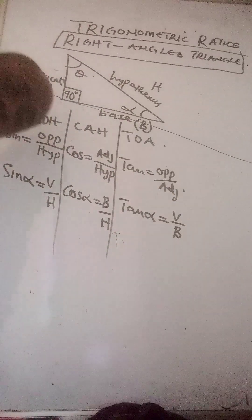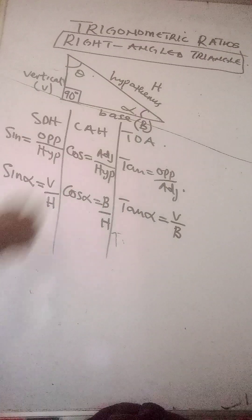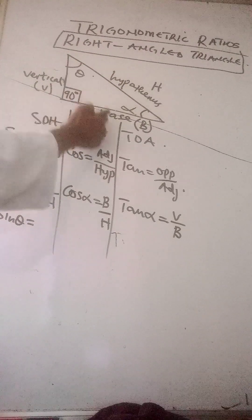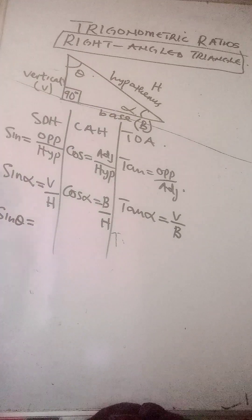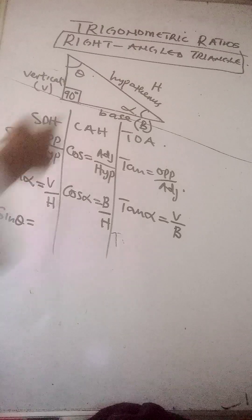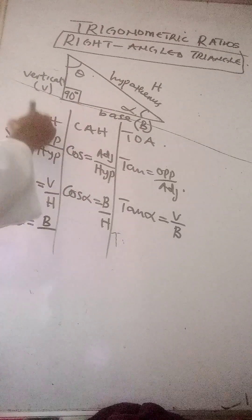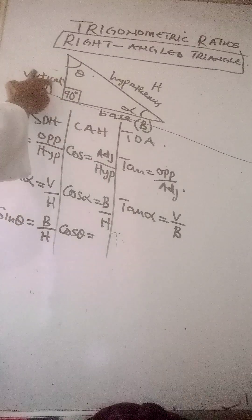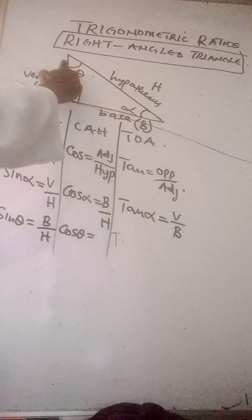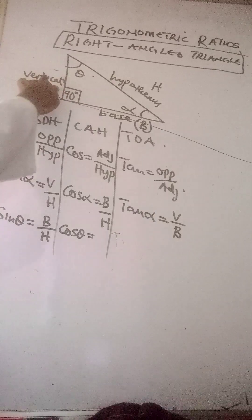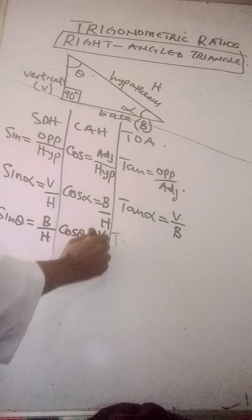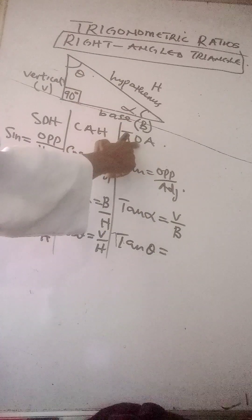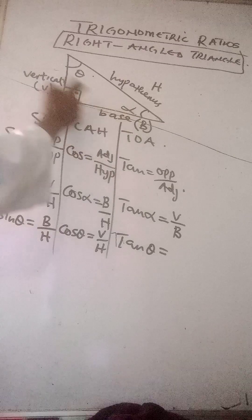If I decide to use angle theta instead, then sine theta — the base is now the opposite because it faces theta. So sine theta equals B over H. Cosine theta — the adjacent is now the vertical side, so cosine theta equals V over H. And tangent theta, which is opposite over adjacent, equals B over V.